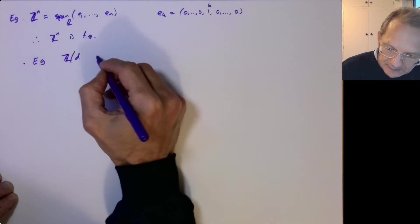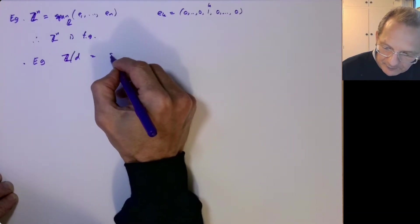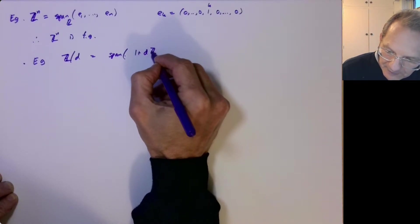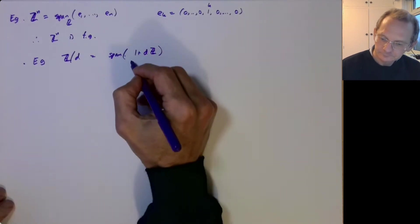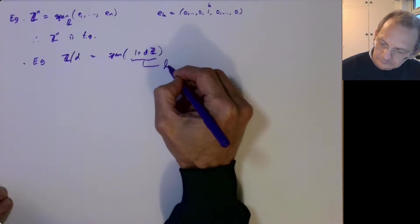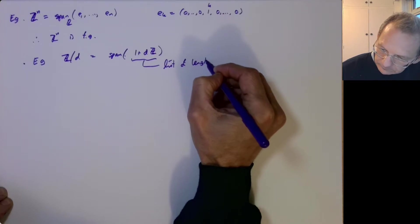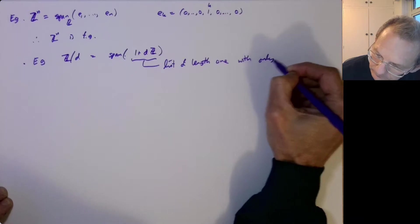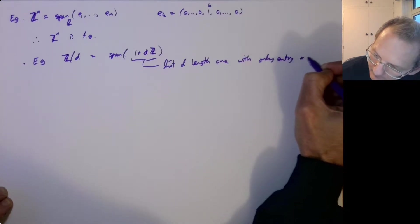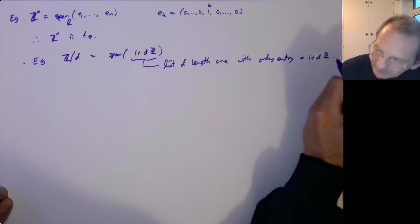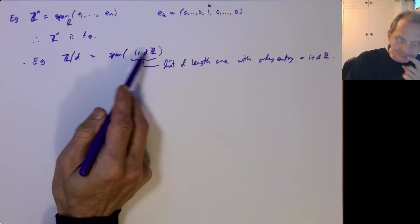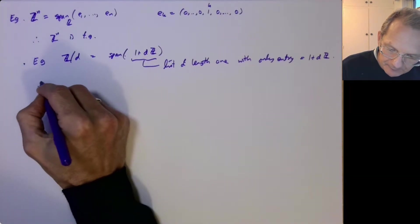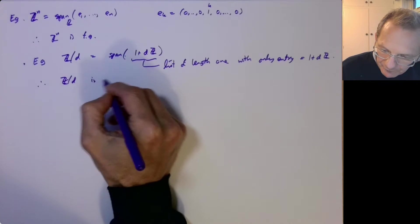And if you look at Z mod D, we only need one generator, just a list of length one. I mean, everything in Z mod D is just a multiple of this guy. So Z mod D is finitely generated.